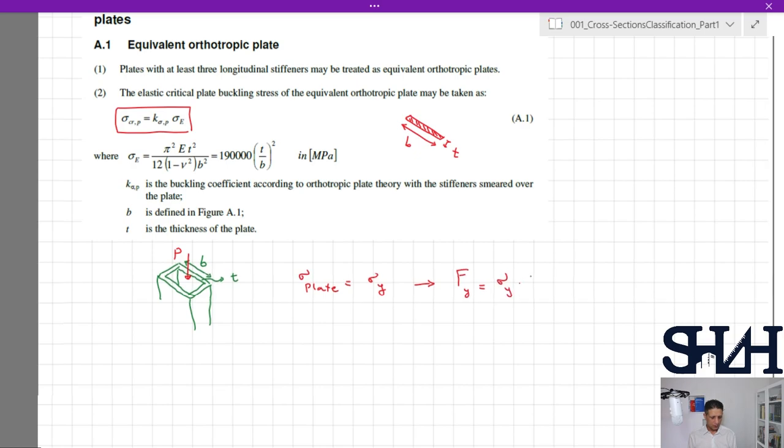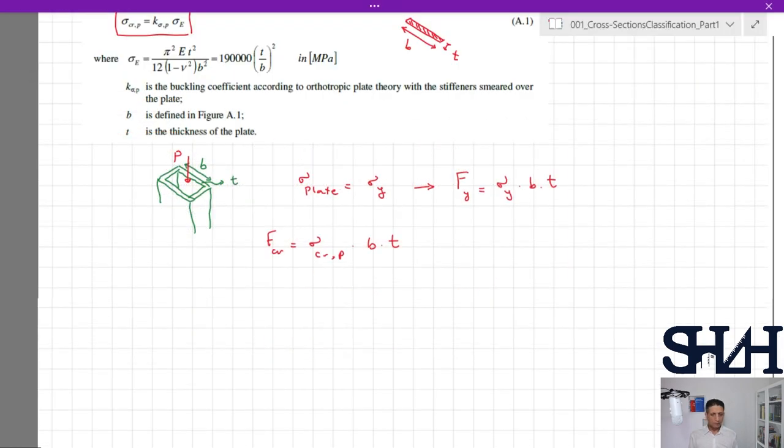To ensure that local buckling doesn't happen in this part, the resistance of the profile in local buckling needs to be higher than this value. So the force for buckling can be calculated by sigma critical of the plate times the area, which is b times t. We always look for having more capacity to take the load rather than buckling locally.